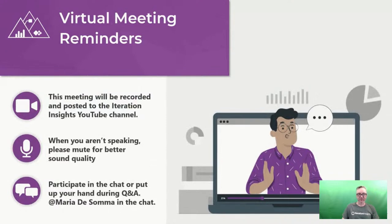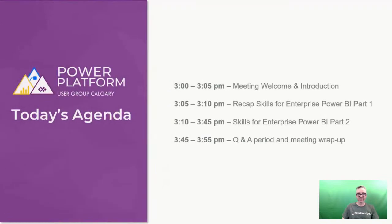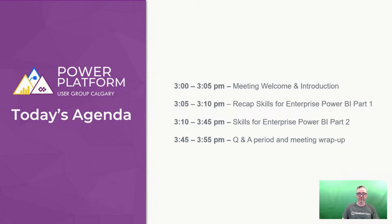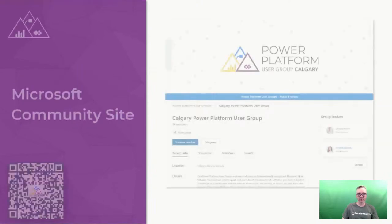You can find this recording after the fact in plenty of places. If you do any speaking, make sure you mute yourself for better sound quality, and we'll be monitoring the chat for questions. The agenda today is in Mountain Standard Time — at 3 o'clock we'll do the meeting welcome and introduction, 3:05 to 3:10 a recap on the previous user group where we talked about enterprise skills for Power BI and some myths we want to dispel, then at 3:10 we get into Part 2, wrapping up with 10–15 minutes of Q&A.